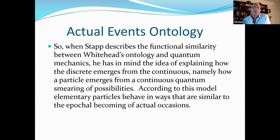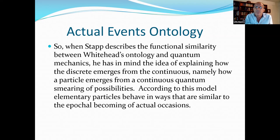So, when Stapp describes the functional similarity between Whitehead's ontology and quantum mechanics, he has in mind the idea of explaining how the discrete emerges from the continuous, namely how a particle emerges from the continuous quantum smearing of possibilities. According to this model, elementary particles behave in ways that are similar to what Whitehead calls the epochal becoming of actual occasions. Now, notice they're not to be identified, because from Whitehead's point of view, what's going on at this more basic ontological level is not to be associated or equated with what happens once we get societies, that is to say, matter and aggregates and so on and so forth.